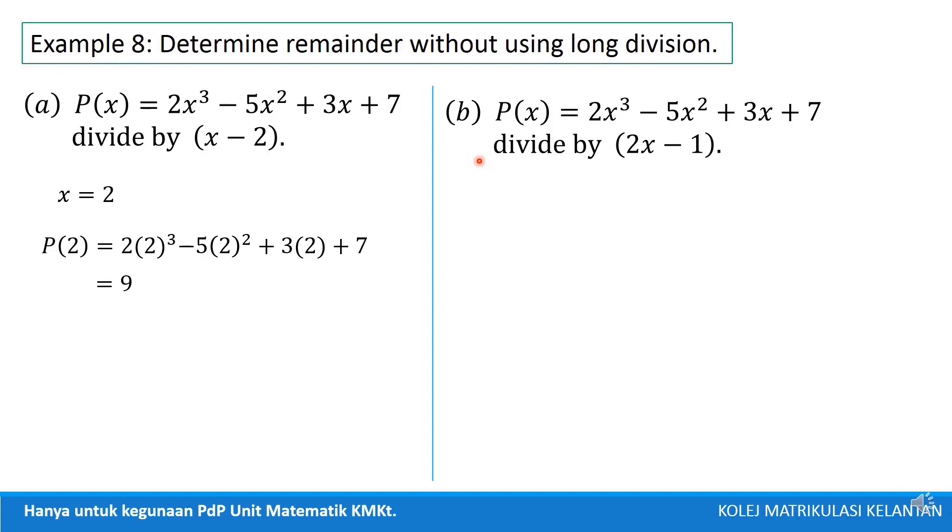For question b, we have the same polynomial as a, but divided by a different divisor here. We have a divisor is 2x minus 1, then the value of x is 1 over 2.